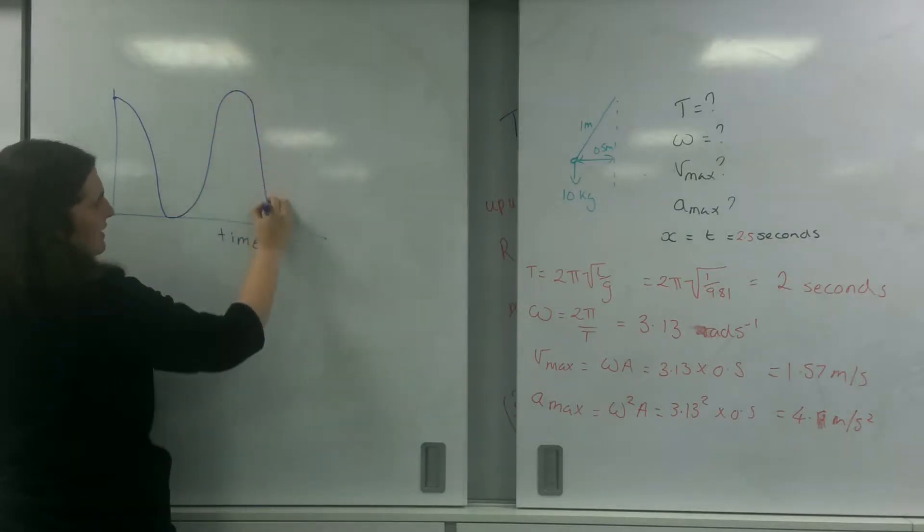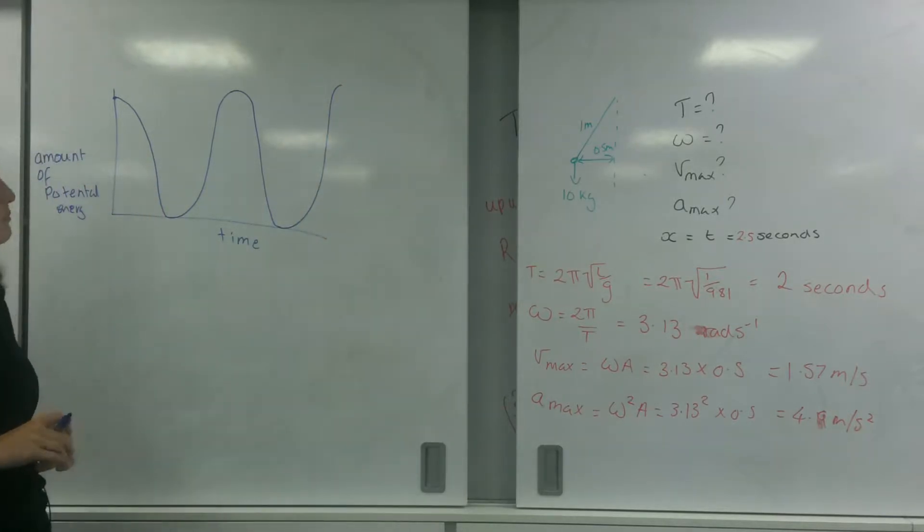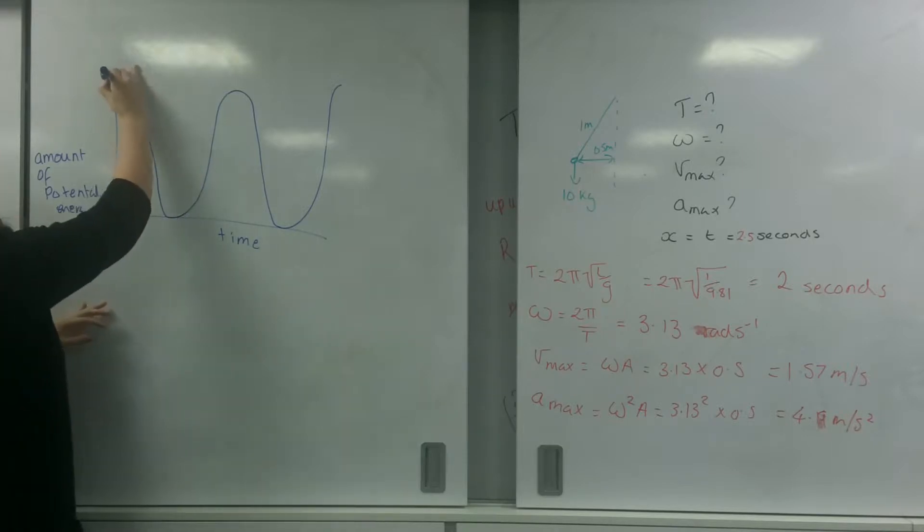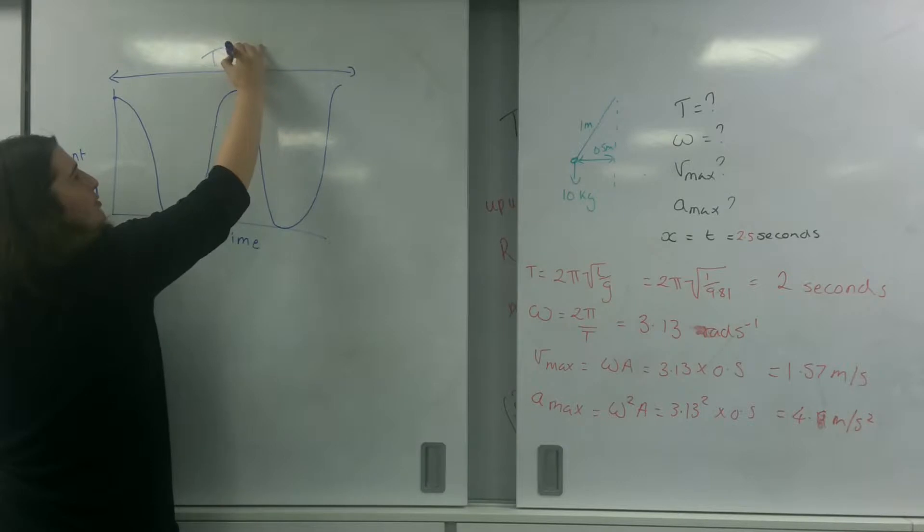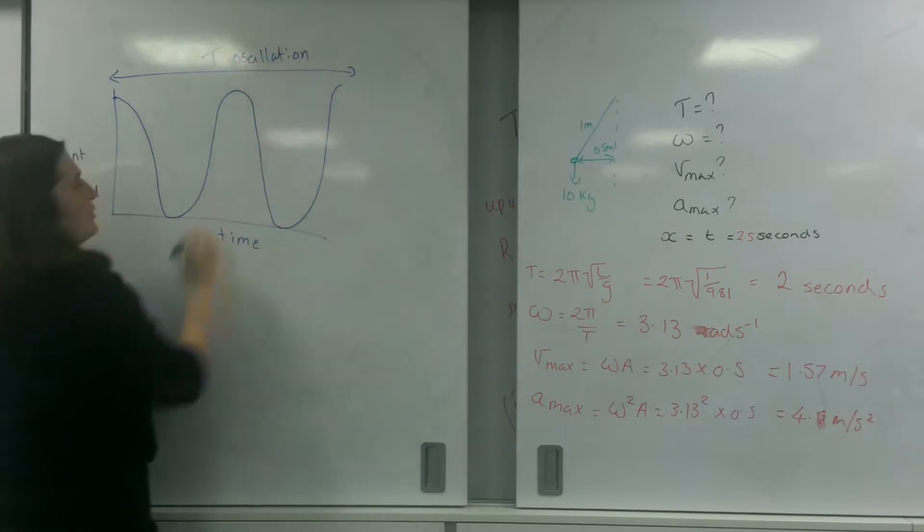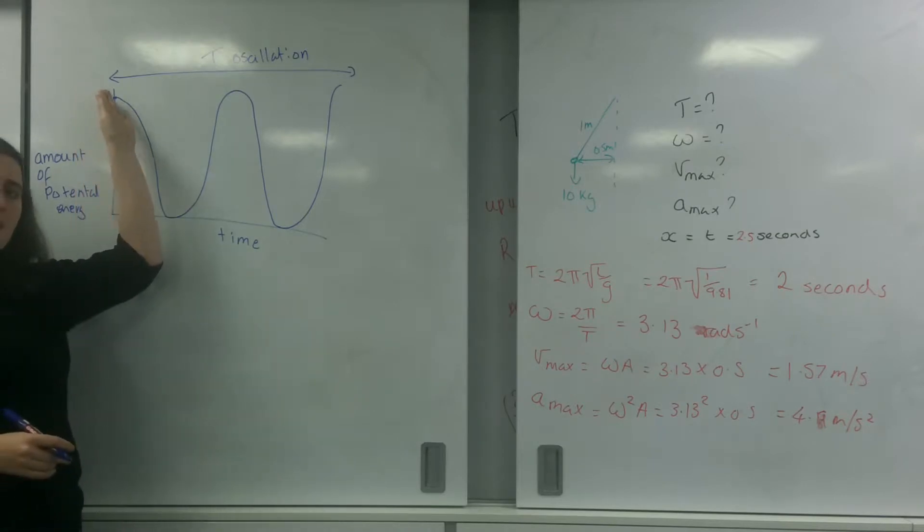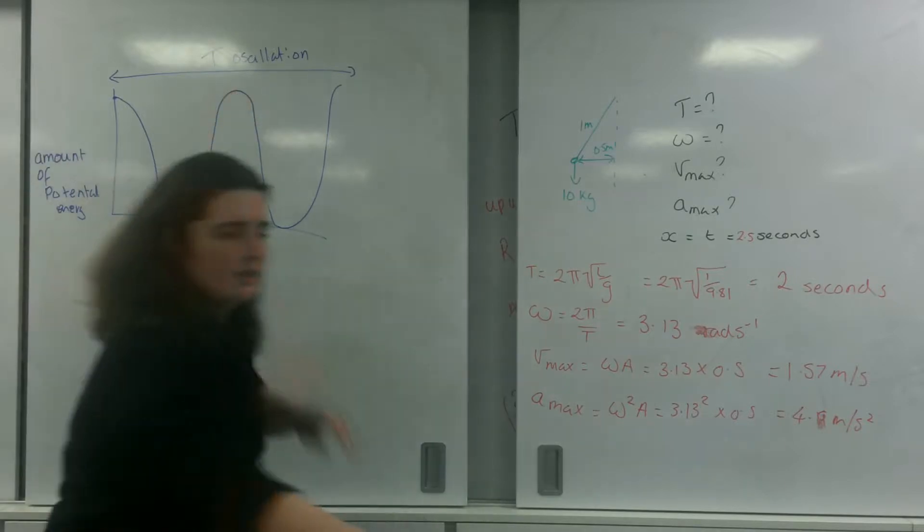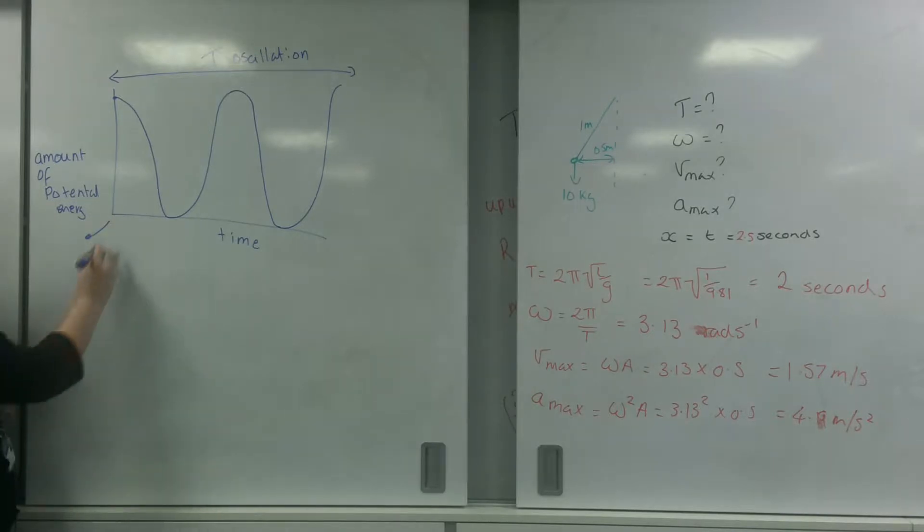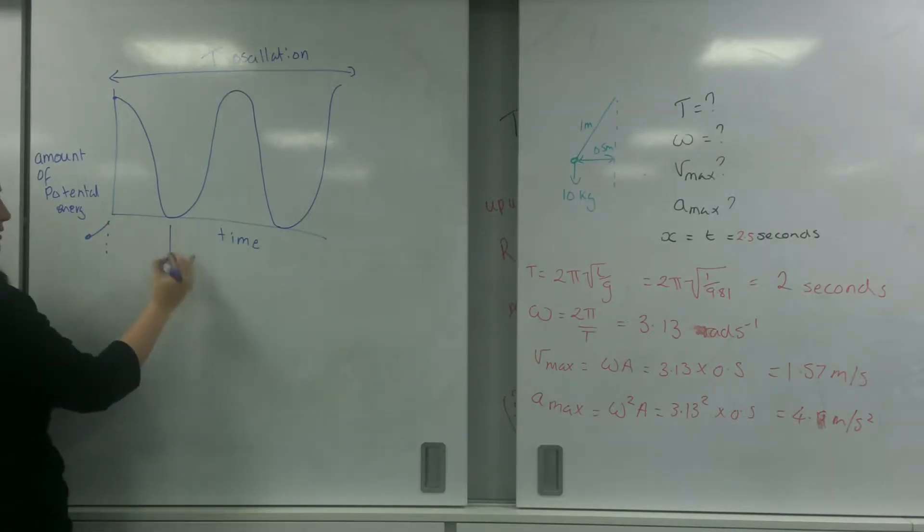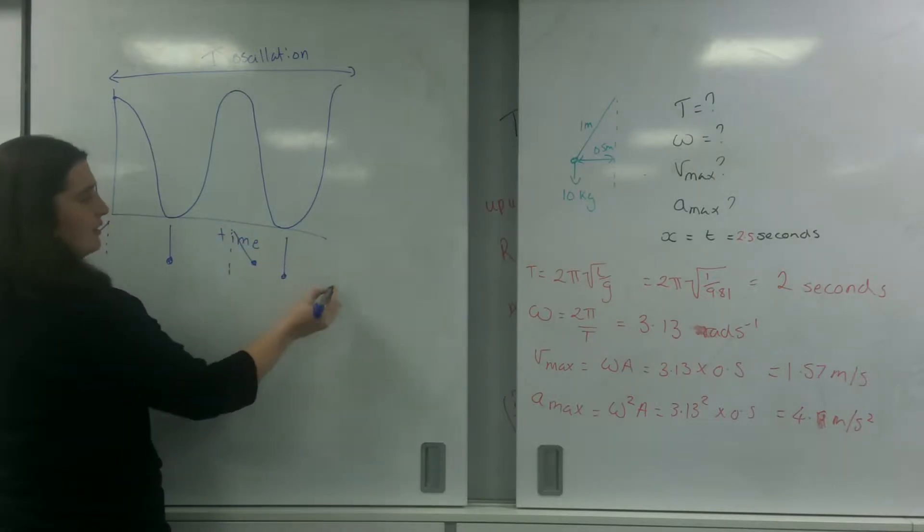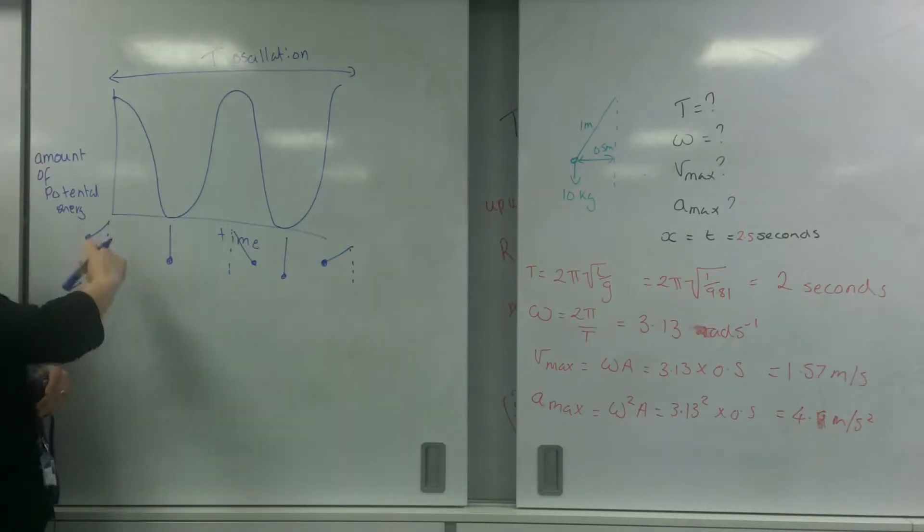And it's important to realize that this cycle here would be your time period for your oscillation. Because you go to maximum GPE, to no GPE because you've only got kinetic, to maximum GPE again to the other side. So if I drew it underneath, GPE, none, none, and then back again. As you can see, one oscillation is these two oscillations for GPE.